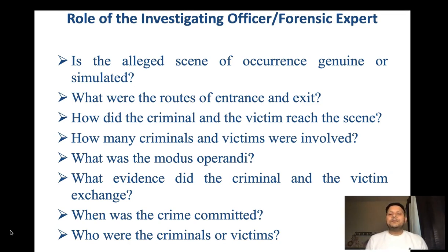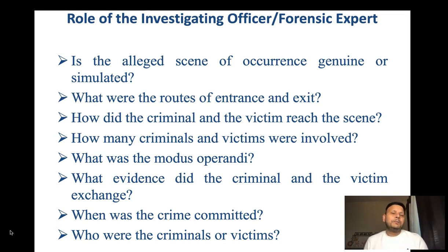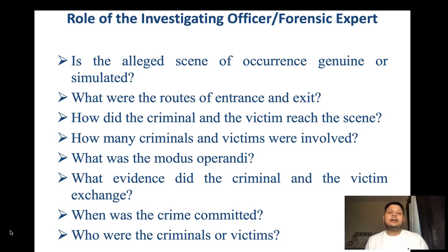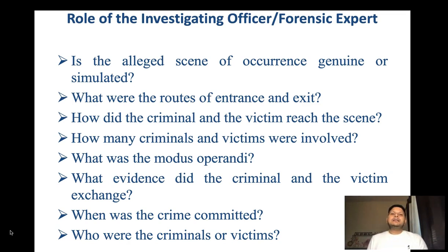Next: how many criminals and victims were involved? We assess this by looking at different kinds of evidence — for example, multiple cigarette butts whose saliva DNA can be tested to count how many people were present. Number of footprints, number of fingerprints — all these give an idea of how many individuals were at the scene. Blood not belonging to the known victim may indicate another injured person who could be a victim or suspect.